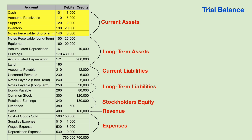Cash is the definition of a current asset. Accounts receivable will be converted to cash in 30 days if everyone pays on time — even if someone pays in 60 or 90 days, that's still within 12 months, so accounts receivable is a current asset. Supplies will be used up within 12 months. Inventory is current because nobody keeps two years' supply — it could get stolen, damaged, or become obsolete. Notes receivable could be current or long-term; a note receivable is anything someone owes you and will pay off within the next 12 months.